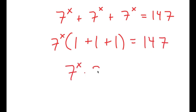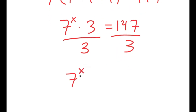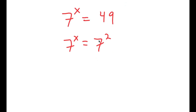So 7 to the power of x times 3 is equal to 147. Now from here, I'm going to divide both sides by 3. So 7 to the power of x is equal to 147 divided by 3, which equals 49. So I get 7 to the power of x is equal to 49. And 49 is equal to 7 squared. So I have 7 to the power of x is equal to 7 to the power of 2, meaning x is equal to 2.